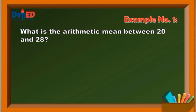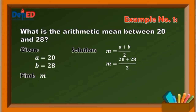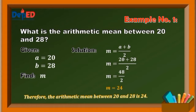Say for instance, what is the arithmetic mean between 20 and 28? The given values are A is equal to 20, B is equal to 28, and M, which is the arithmetic mean, is unknown. So M is equal to A plus B divided by 2. Substitute the given: M is equal to 20 plus 28 divided by 2. Simplify: M is equal to 48 divided by 2. So M is equal to 24. Therefore, the arithmetic mean between 20 and 28 is 24.